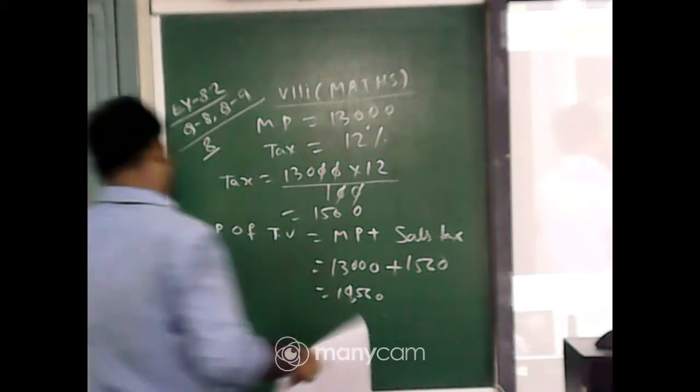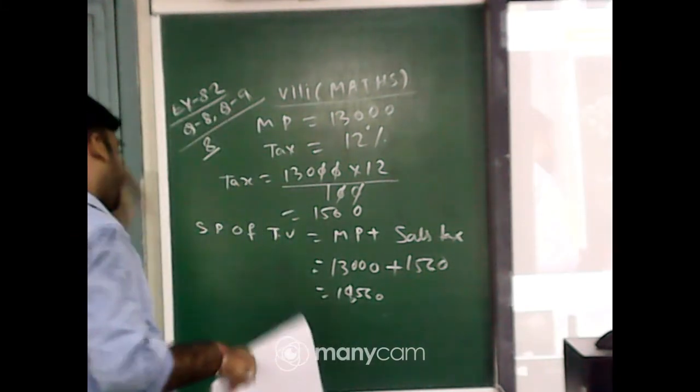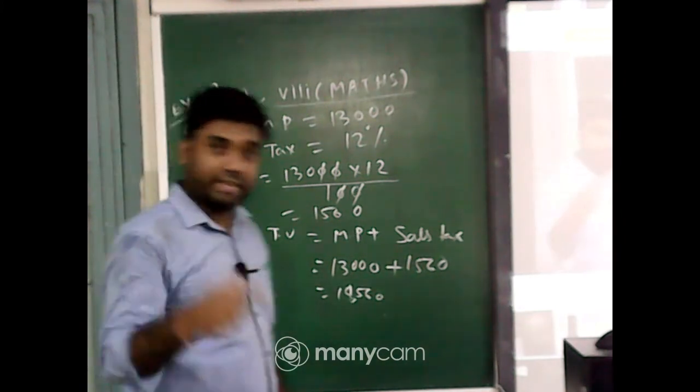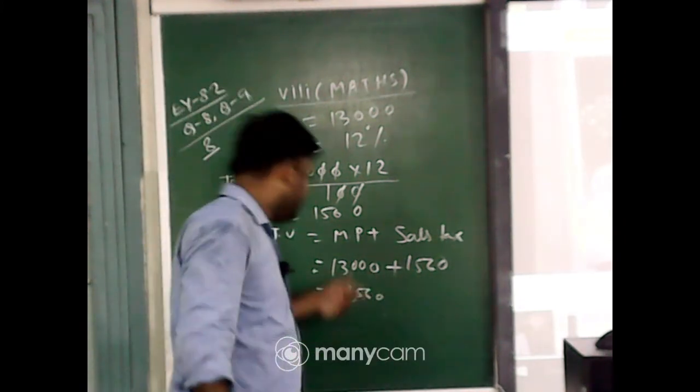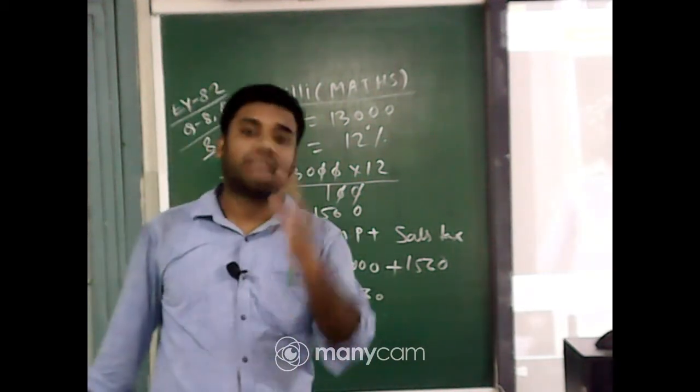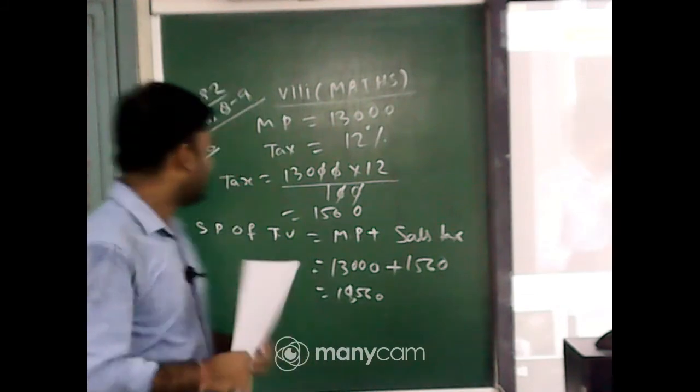14,560 is the amount that has to be paid including tax. That is the selling price of the TV which price is 13,000. That is question number 8. Now moving on to question number 9.